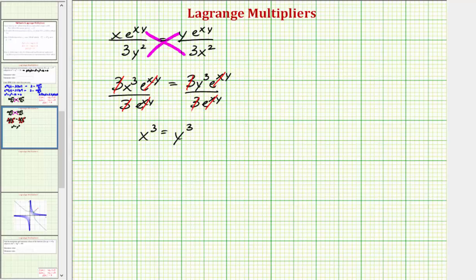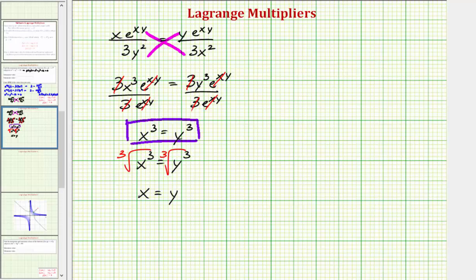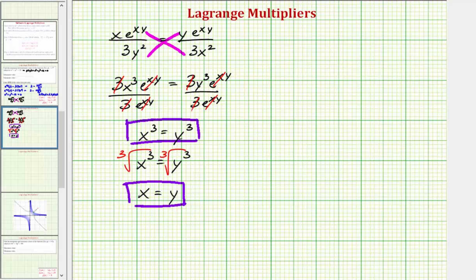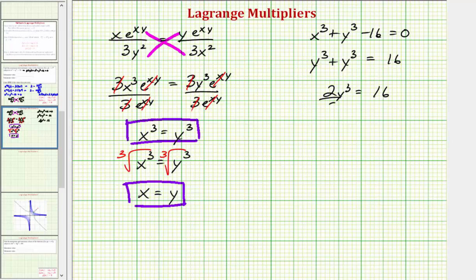We can solve x cubed equals y cubed for x by taking the cube root of both sides: the cube root of x cubed is x, the cube root of y cubed is y. So x equals y. Using the constraint x cubed plus y cubed minus 16 equals zero, we replace x cubed with y cubed to get y cubed plus y cubed equals 16, giving us 2y cubed equals 16, so y cubed equals 8.